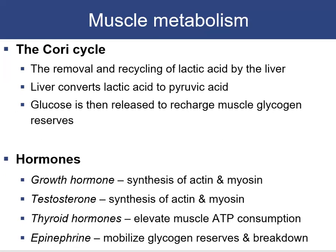The Cori cycle removes and recycles lactic acid by shunting it to the liver, where it is converted back to pyruvic acid to recharge glucose, which is then released back to the muscle to replenish glycogen reserves. Regarding hormones: growth hormone and testosterone affect actin and myosin synthesis; thyroid hormone elevates muscle ATP consumption; epinephrine mobilizes glycogen reserves so muscles can work faster and stronger.